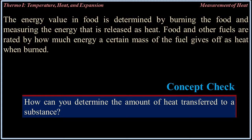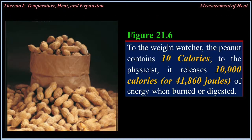To the weight watcher, a peanut contains 10 Calories. To the physicist, it releases 10,000 calories — or 41,860 joules of energy — when burned or digested.